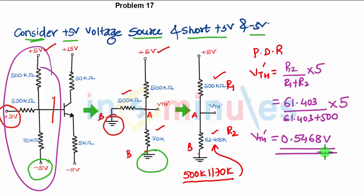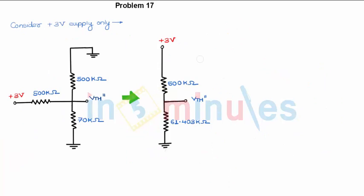Now considering plus 3 volts, the plus 5 volt voltage source is grounded and the minus 5 voltage source is grounded. Again, this 500k and 70k will come in parallel.